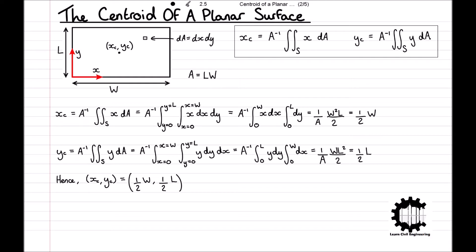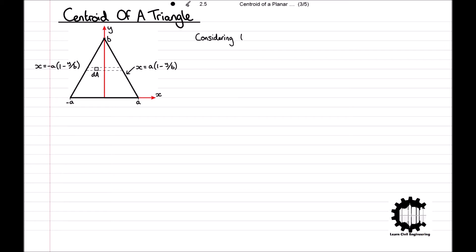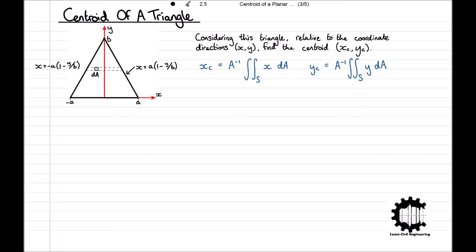It is not common for a situation to have constant integral limits. To see how to calculate the position of the centroid for a scenario where the integral is not separable, we will look at the example of a symmetric triangle. Considering the triangle shown, relative to coordinate directions XY, find the centroid XC YC. By intuition we know that XC is equal to 0; however, let's still work it out manually for practice.